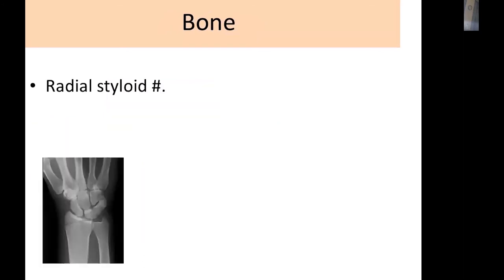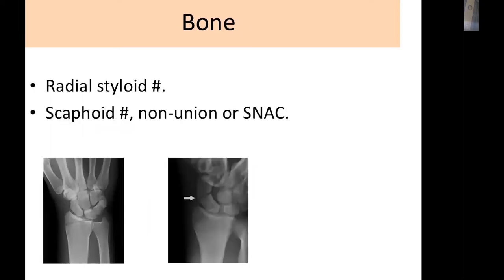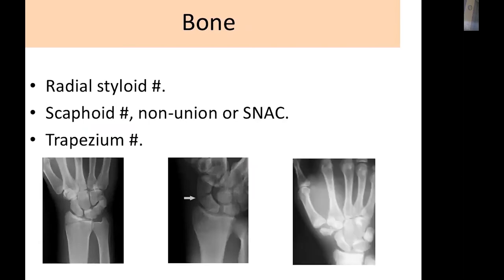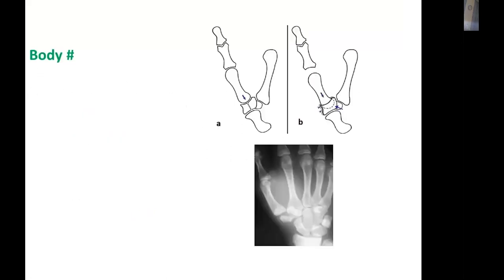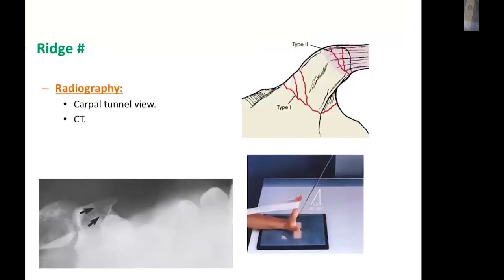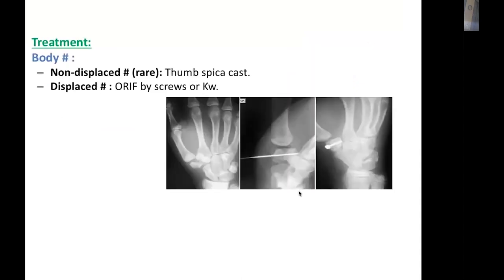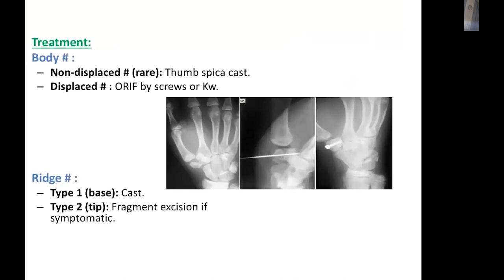Regarding bony pathology, suspect a radial styloid fracture or scaphoid fracture or non-union following trauma — sometimes the trauma is forgotten. Trapezium fractures can occur with axial loading of the thumb. Trapezium fractures may be body fractures from compressive force or ridge fractures, identified by CT scanner or carpal tunnel view. Treatment ranges from K-wire or screw fixation to conservative management in non-displaced fractures.